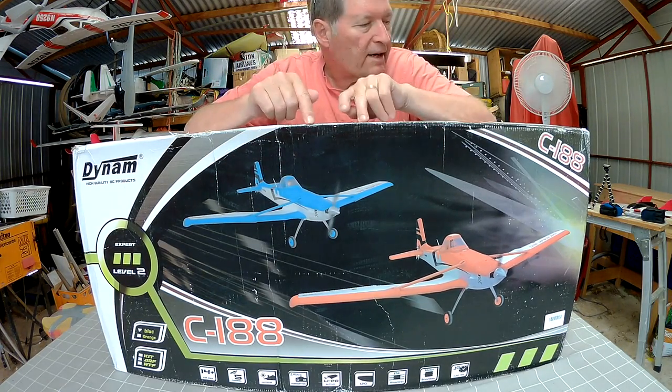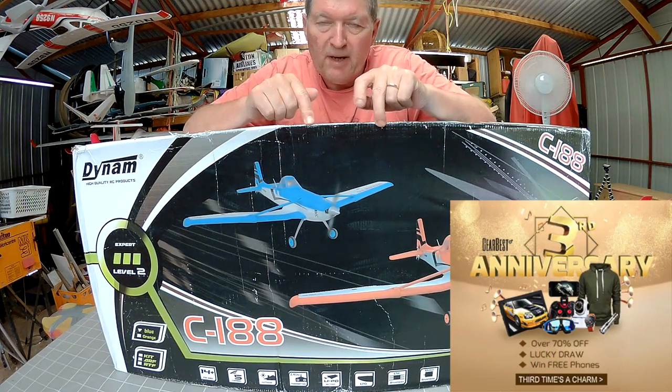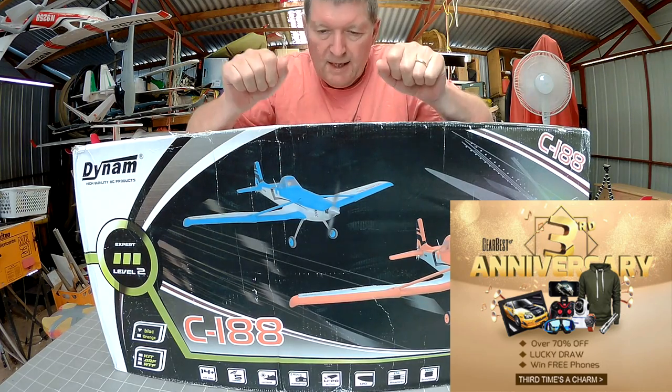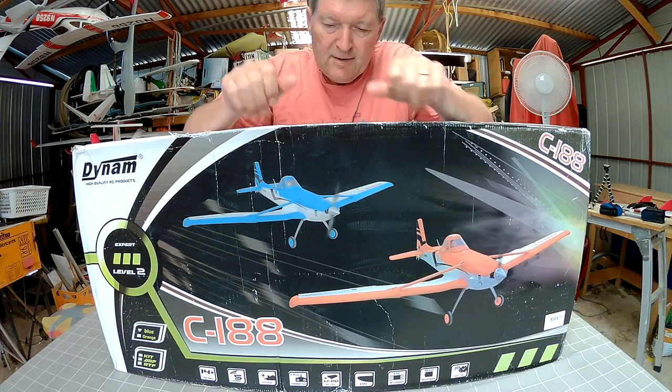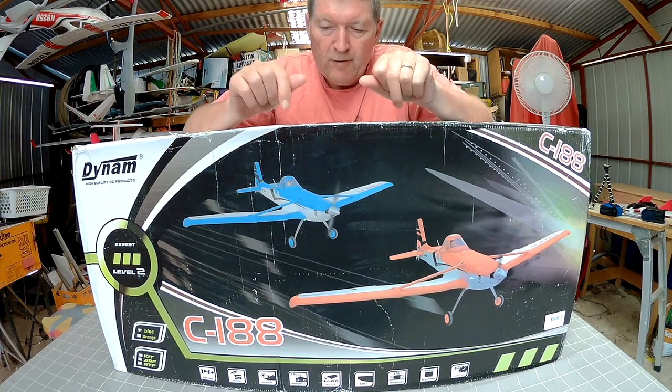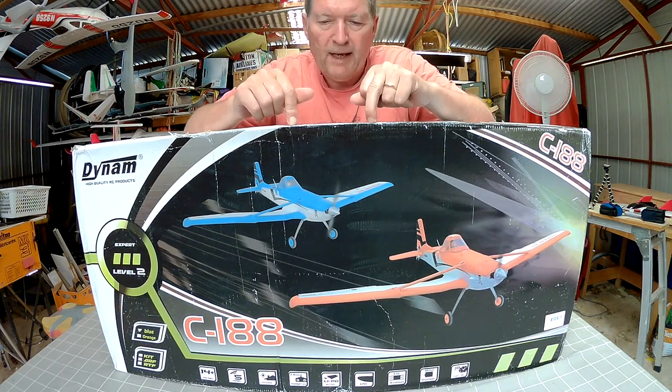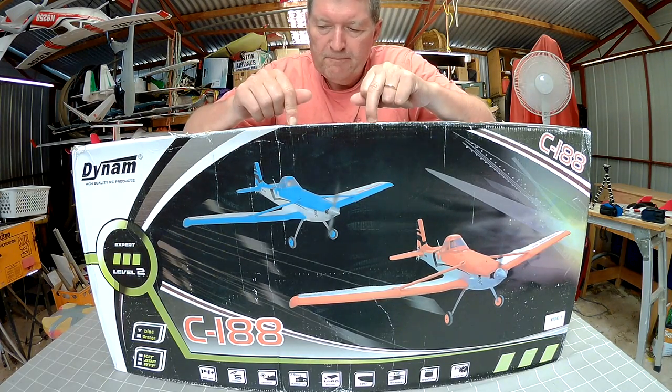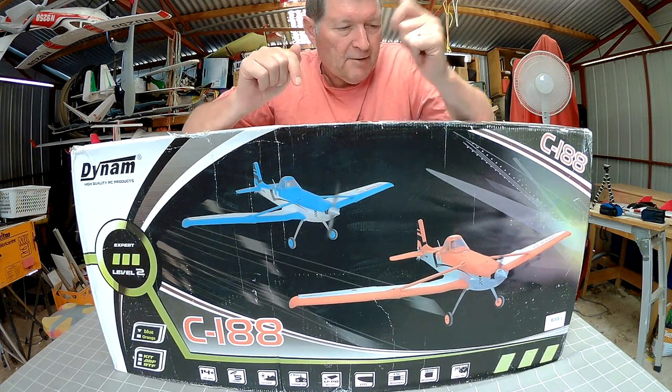Howdy folks, this is the Dynam C188 from GearBest. It's a crop duster style plane or agricultural plane, often also used as a glider tow plane in real life. Looks like a great plane to fly, let's get into it.